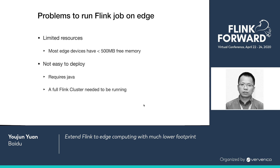However, there are a few problems to run native Flink on those devices. The first and most important one is limited resources. The devices may have unstable network connection, very limited data plan, and limited disk space. In terms of streaming, the most critical issue is memory. As far as we know, more than half of those devices don't even have 500MB of RAM, which makes it nearly impossible to deploy a Flink cluster on them, not to mention the jobs.